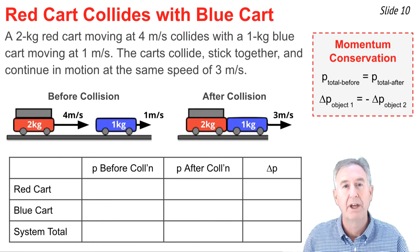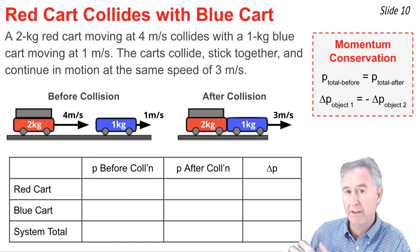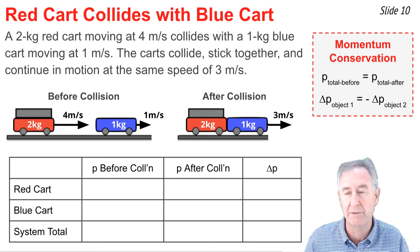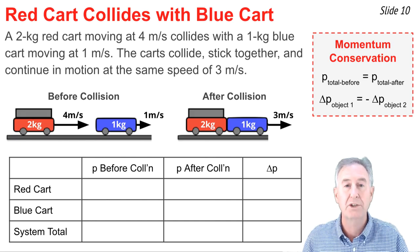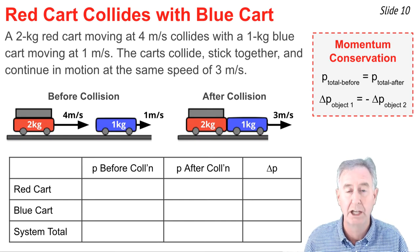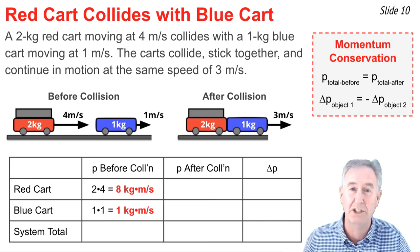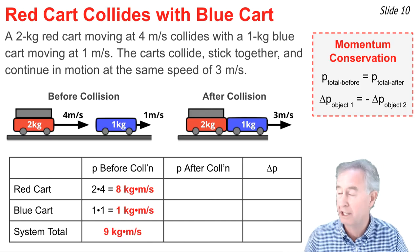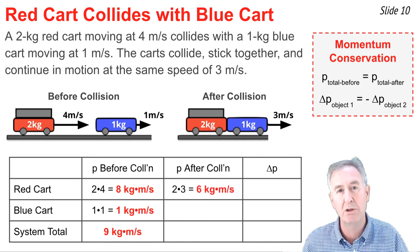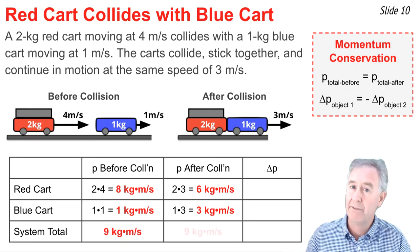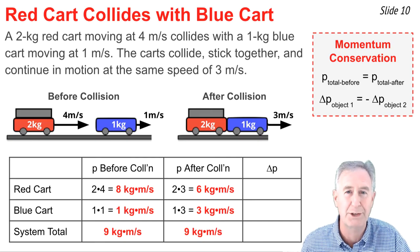Now let's analyze this example. A 2 kg red cart is moving at 4 meters per second when it collides with a 1 kg blue cart moving at 1 meter per second. The two carts stick together with velcro and move at 3 meters per second after the collision. Using a momentum table: before the collision, the red cart has momentum 2 times 4 equals 8, and the blue cart has 1 times 1 equals 1. Total momentum before is 9 units. After the collision, the red cart has 2 times 3 equals 6, and the blue cart has 1 times 3 equals 3. The total momentum after is 6 plus 3 equals 9 units — the same before as after.